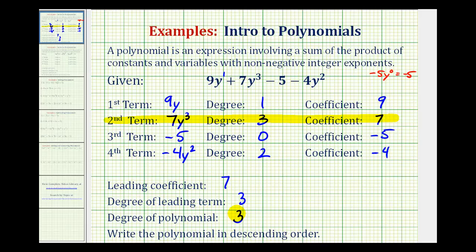And then normally when writing a polynomial, we want the terms to be in descending order. Which means we arrange the terms so that the highest degree term is first, followed by the other terms in order of decreasing degree.